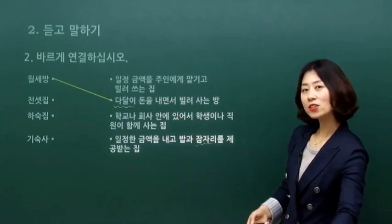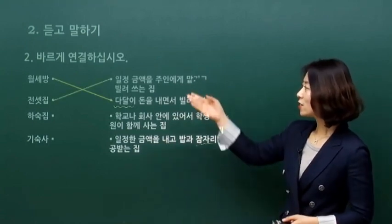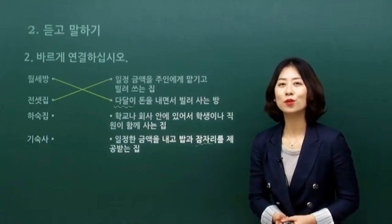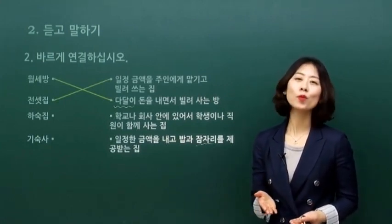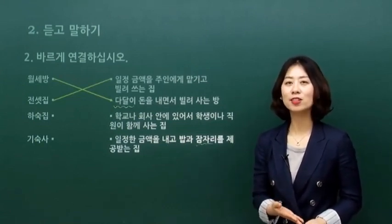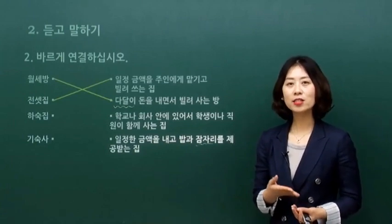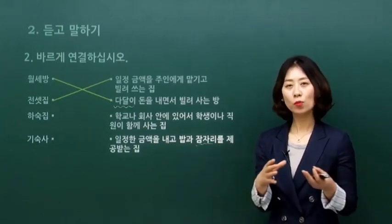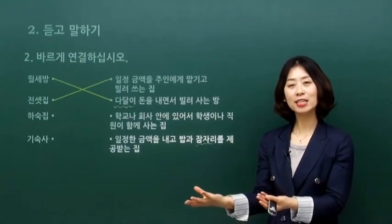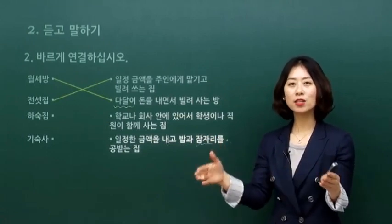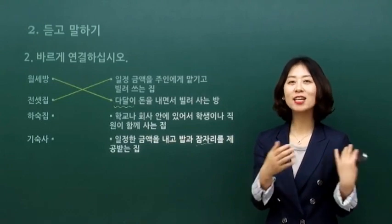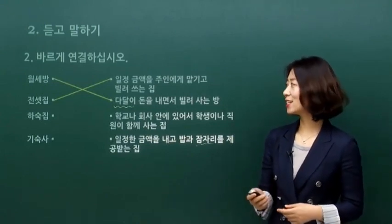전셋집은 일정 금액을 주인에게 맡기고 빌려서 쓰는 집이에요. 제가 몇몇 나라의 학생들에게 물어보니까 전세가 있는 나라가 별로 없었어요. 한국에만 있는 형태라고 학생들이 이야기하기도 했고요. 전셋집은 1억, 또는 6천만 원 같은 큰 금액을 주인에게 맡기고, 약 2년 계약 후 이사를 나갈 때 그 돈을 그대로 받아서 나가는 형태입니다.